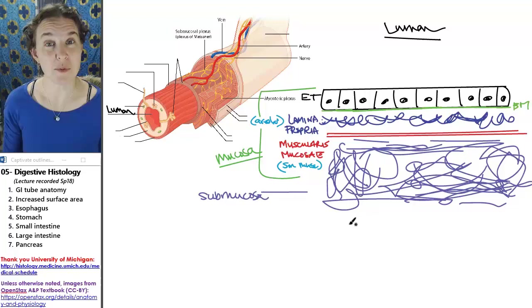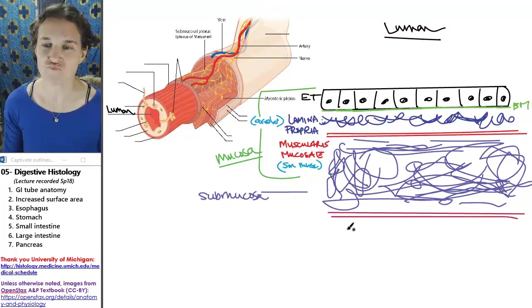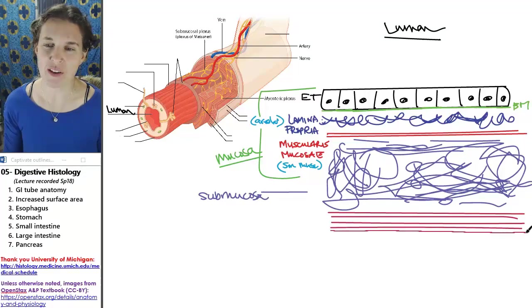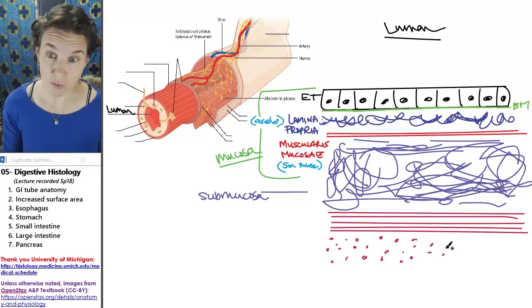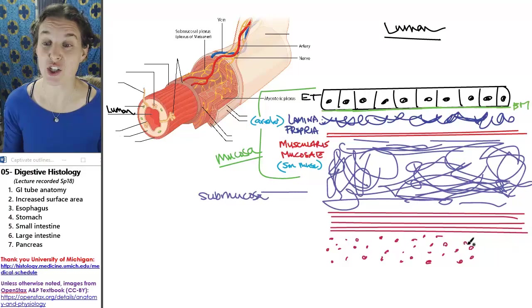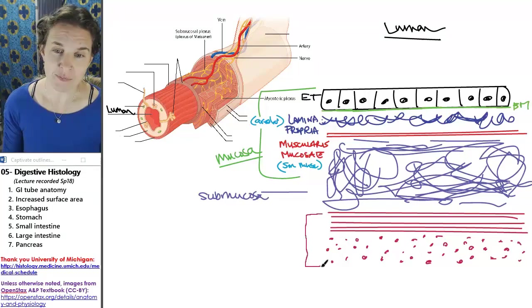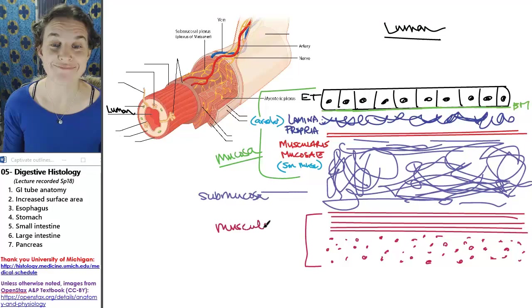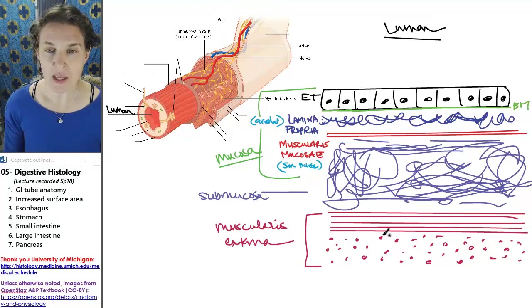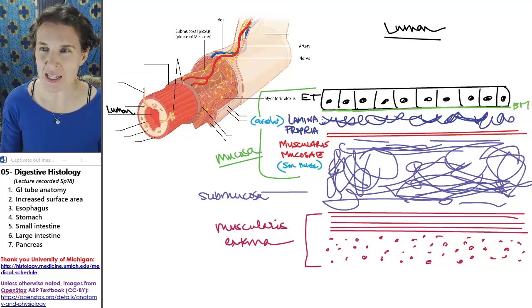Basal to submucosa is another layer. What kind of tissue am I drawing? I'm giving you a hint. I've already drawn it once. This layer is usually two layers, same kind of tissue, and it's called muscularis externa. Muscularis externa usually is two layers, and usually it is made out of smooth muscle also.